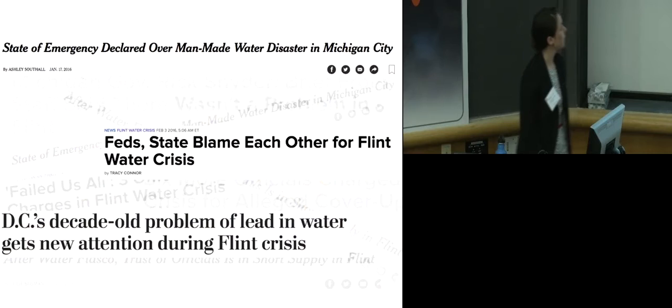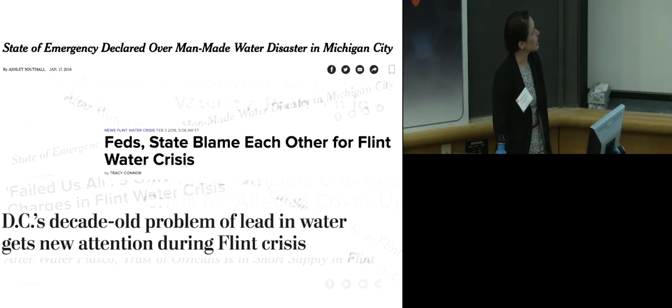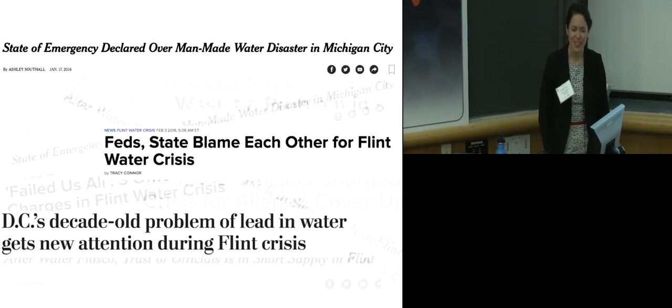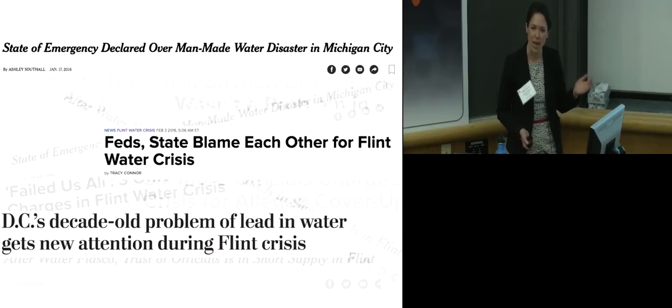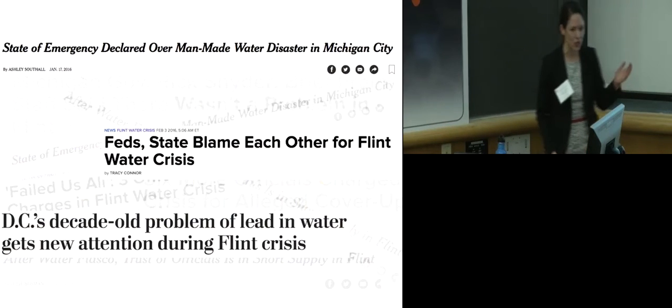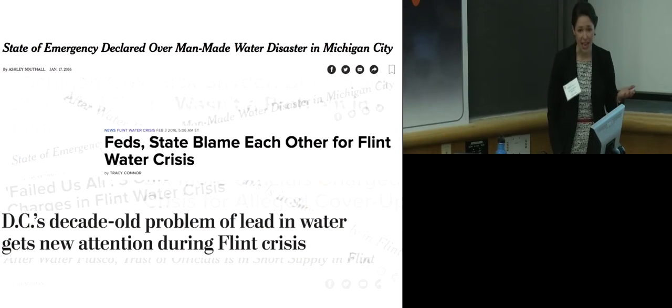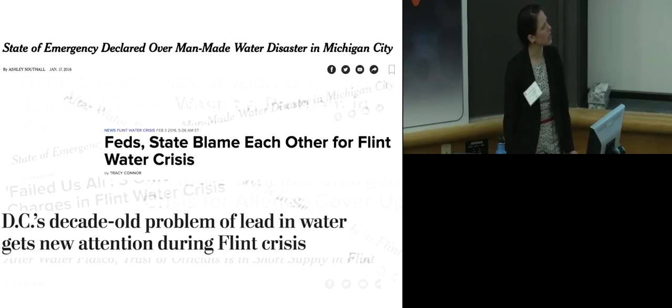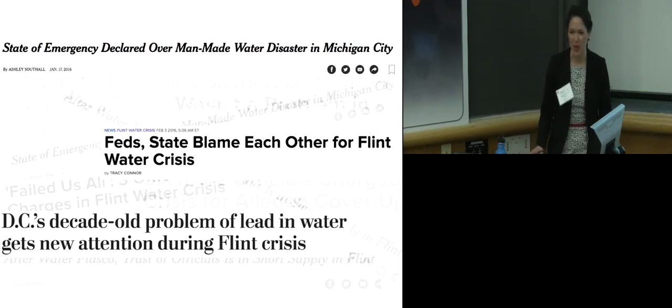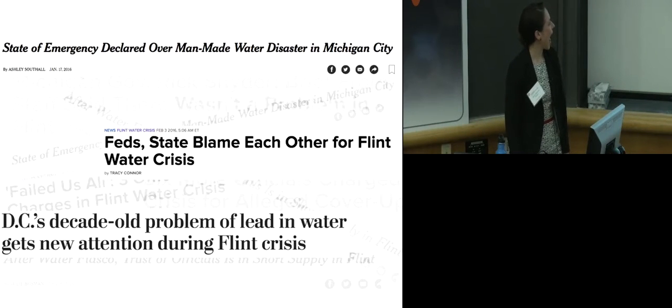So, we have a headline. Let's look at some of them. State of Emergency declared over a man-made water disaster in Michigan City. This isn't a normal disaster. There's a distinction being made here. It's a man-made disaster, not a natural disaster, and it likely has something to do with our mental model. The second headline: Feds, state blame each other for Flint water crisis. So, what's a wicked problem without a wicked relationship?